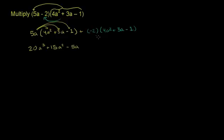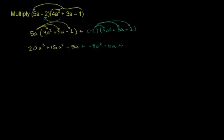Now we do the second part: plus negative 2 times 4a squared. Negative 2 times 4 is negative 8a squared. Then negative 2 times 3a — negative 2 times 3 is negative 6a. And finally negative 2 times negative 1: a negative times a negative is a positive, so that is positive 2.